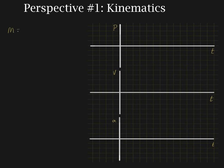The slope is the change in Y over the change in X. On these graphs, the Y-axis is position, which typically we use the letter X to denote — it could be the letter Y if it's in the vertical dimension. The X-axis is our time axis. So for the position-time graph, we would write this as delta X over delta T.